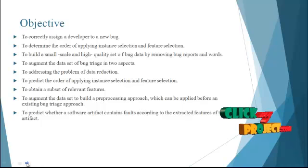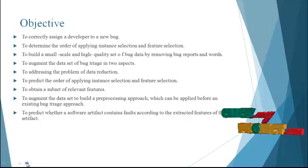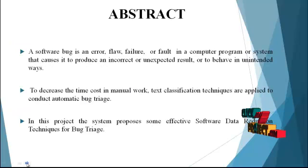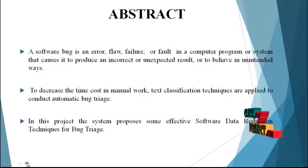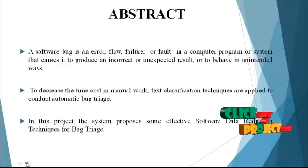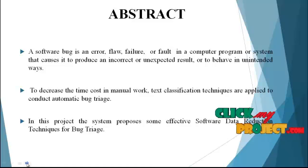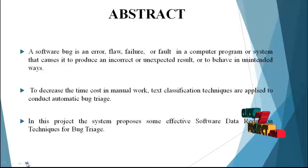This is mainly used to predict whether the software artifact contains faults according to the extracted features of the artifact. Now let me discuss about the abstract of our process. Normally, a software bug is an error, flaw, failure, or fault in a computer program or system that causes it to produce an incorrect or unexpected result, or to behave in unintended ways. To decrease the time and cost in manual work, text classification techniques are applied to conduct automatic bug triage.